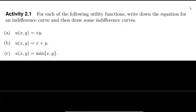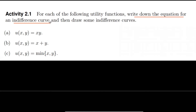Today's topic is Activity 2.1. For each of the following utility functions, write down the equation for an indifference curve and then draw some indifference curves. An indifference curve is a graph which shows constant utility at each level of consumption of two goods. Sometimes we consume more units of one good and less of the second, and vice versa — both combinations give equal levels of satisfaction.